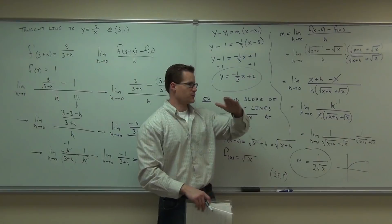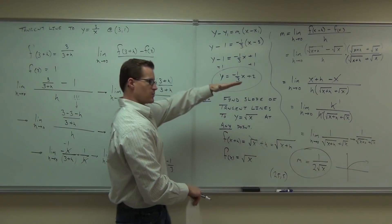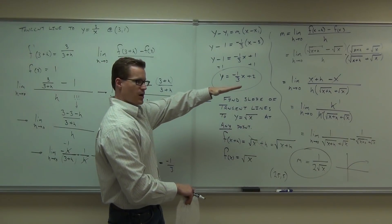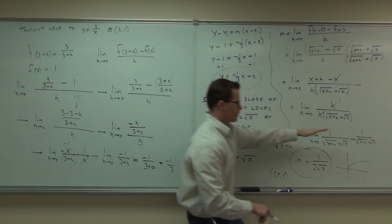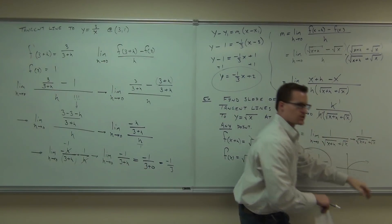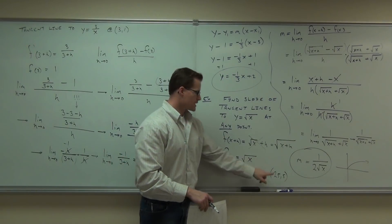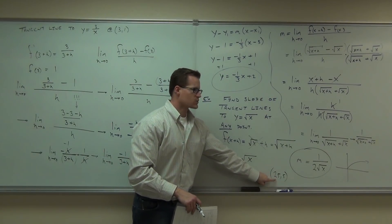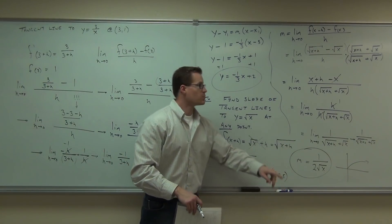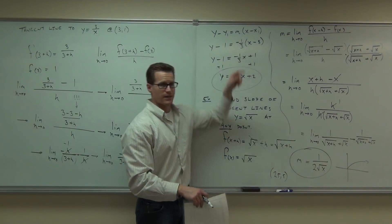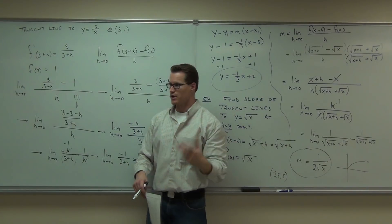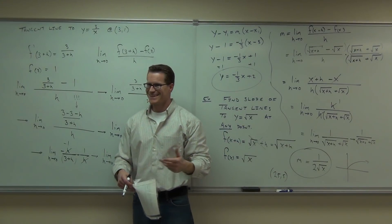That's pretty flat, right? But still positive — one tenth. Could you find the equation of a tangent line? Absolutely. You have one tenth, x₁, y₁ — plug it into that, and now you have yourself the equation of a tangent line.